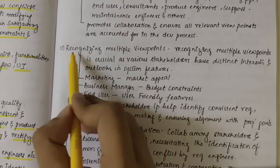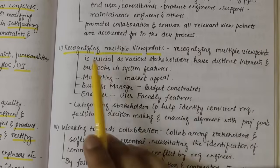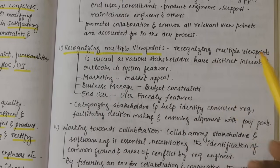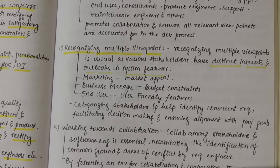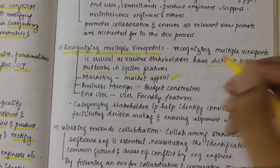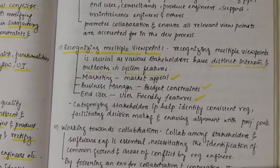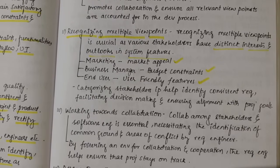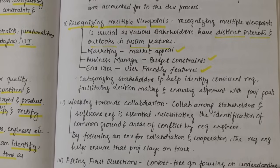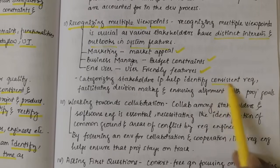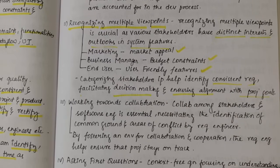Next we have Recognizing Multiple Viewpoints. Multiple viewpoints arise from multiple stakeholders. Recognizing multiple viewpoints is crucial because stakeholders have distinct interests and outlooks. For example, marketing people look into marketing appeal; business people look into business constraints, profit, and loss; and the end user cares whether the software is user friendly. Categorizing stakeholder input helps identify consistent requirements, facilitating decision making and ensuring alignment with project goals.